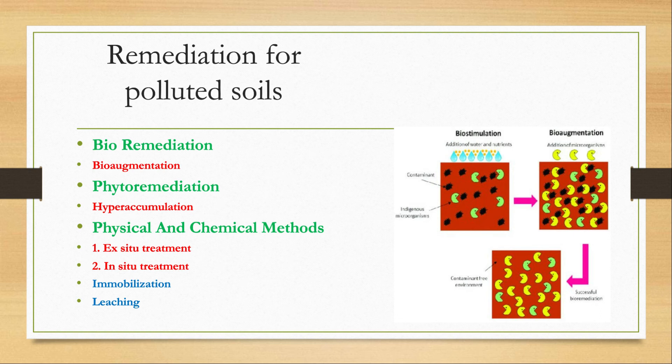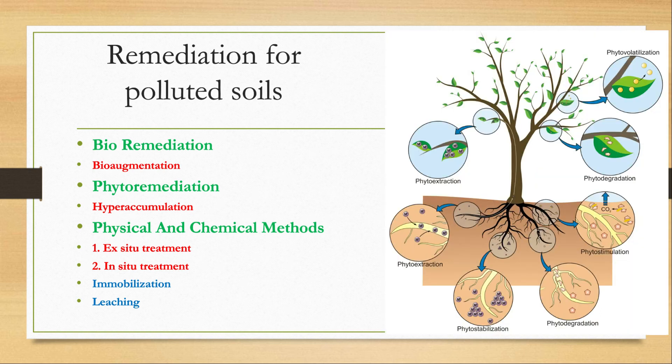Another remediation approach is phytoremediation, in which specific plants are used to remove soil pollutants. This process is slow but less costly. When plants take up a high concentration of pollutants from soil and accumulate them in their biomass, that process is called hyperaccumulation.